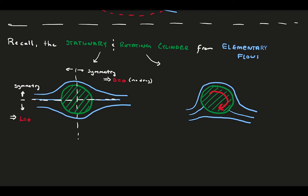In the rotating cylinder, our streamlined pattern is again symmetric about the vertical plane, so again there's no drag in the flow. However, across the horizontal plane we have asymmetry. This means there is a non-zero lift produced by the body.